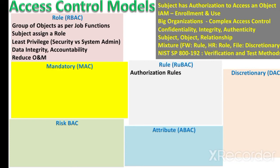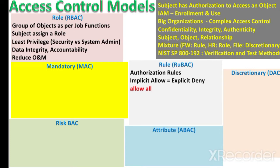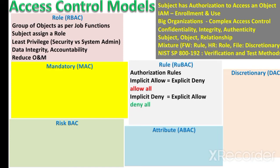In the rule-based access control model we define authorization rules. There is a concept of implicit allow, which is equivalent to explicit deny — everything is allowed unless specified otherwise. This is not a good security practice and should be avoided. The second concept is implicit deny, which is equivalent to explicit allow — everything is denied unless specified otherwise. This is the best security practice.